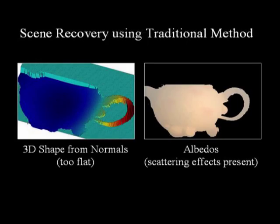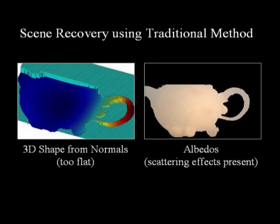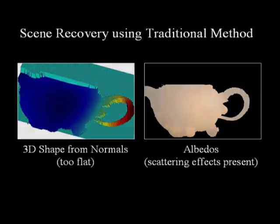If we apply the traditional photometric stereo to these images, the 3D shape obtained is very flat and the scattering effects are absorbed by the computed albedos.